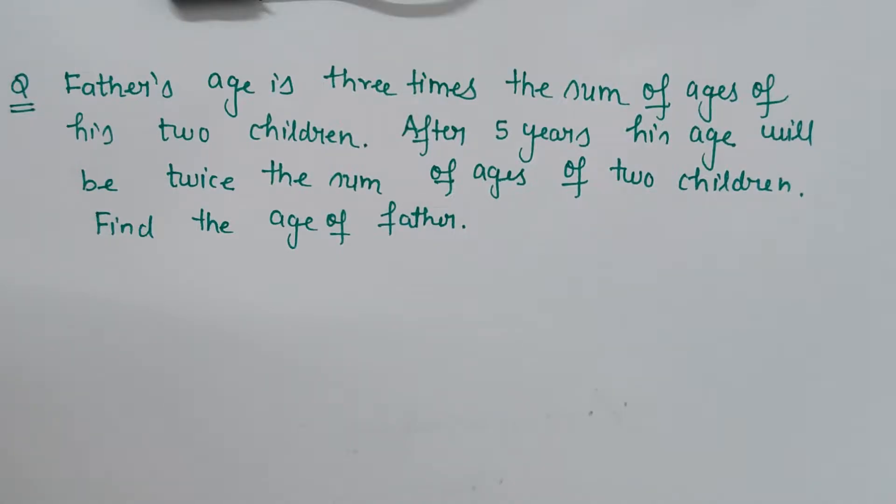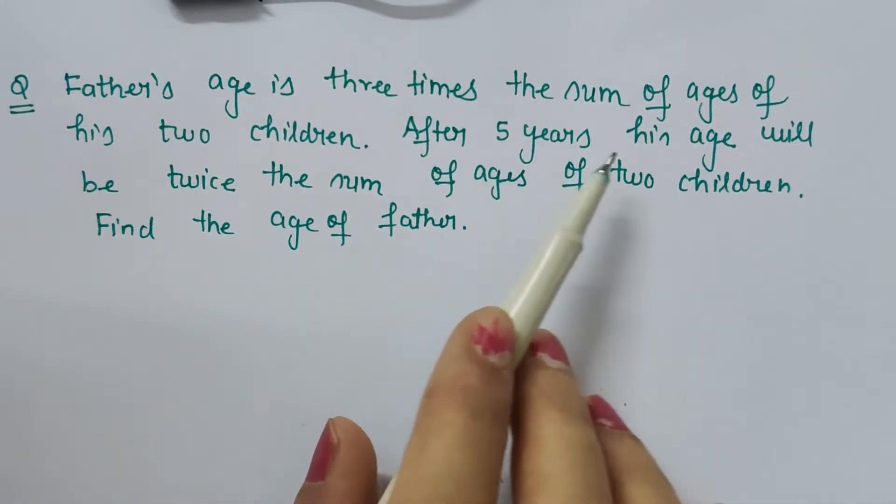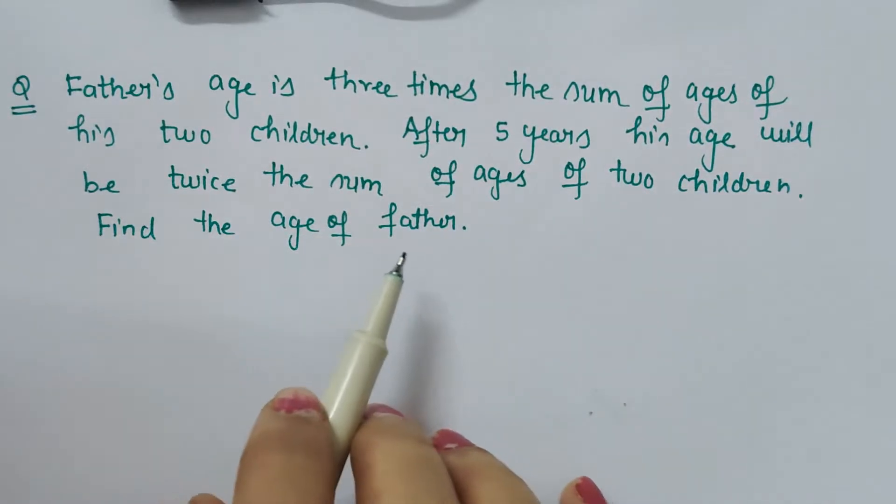Hello friends, this is another very good and interesting question on linear equations in two variables. The question says that father's age is three times the sum of ages of his two children. After five years, his age will be twice the sum of ages of two children. Find the age of father.